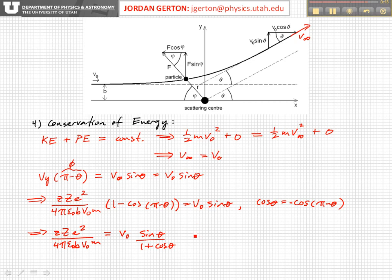And another trigonometric identity is that sine of theta over 1 plus cosine of theta is equal to tangent of theta over 2.